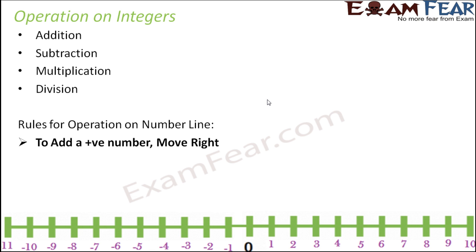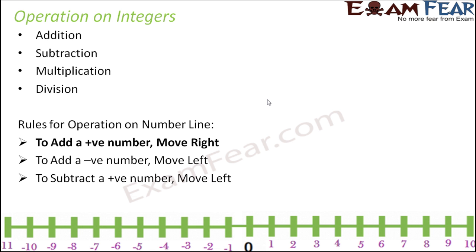When you look at the number line: if you want to add a positive number to an integer, you need to move towards the right. If you want to add a negative number to the integer, you need to move towards the left. Similarly, just the opposite in case of subtraction — subtract a positive number and you move left; subtract a negative number and you move right.